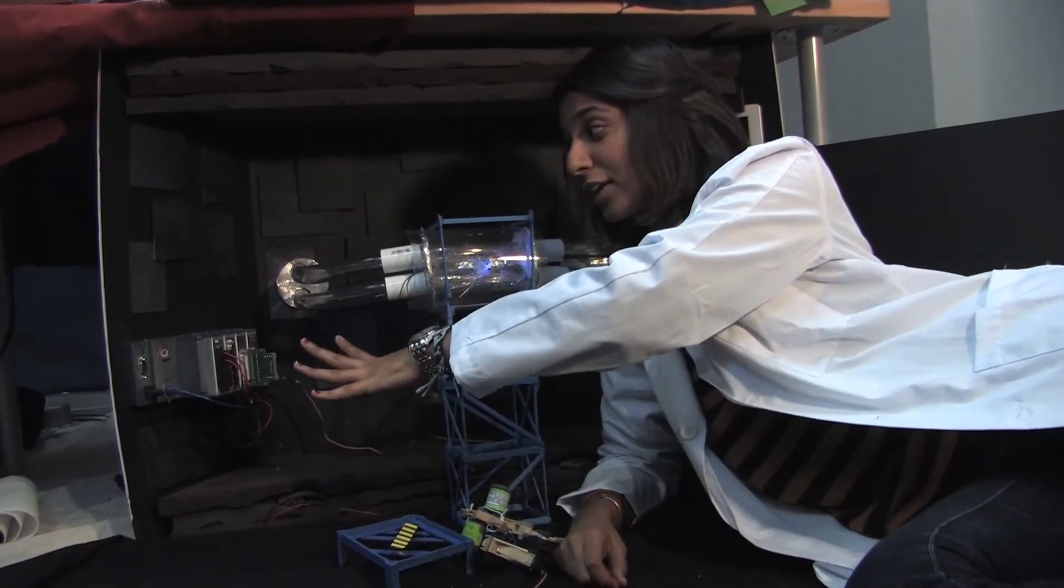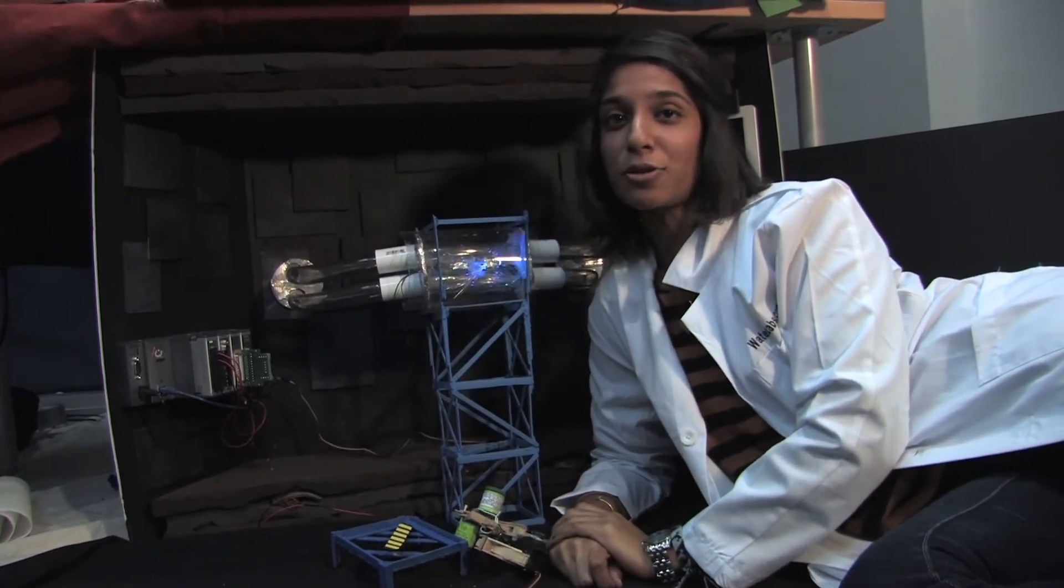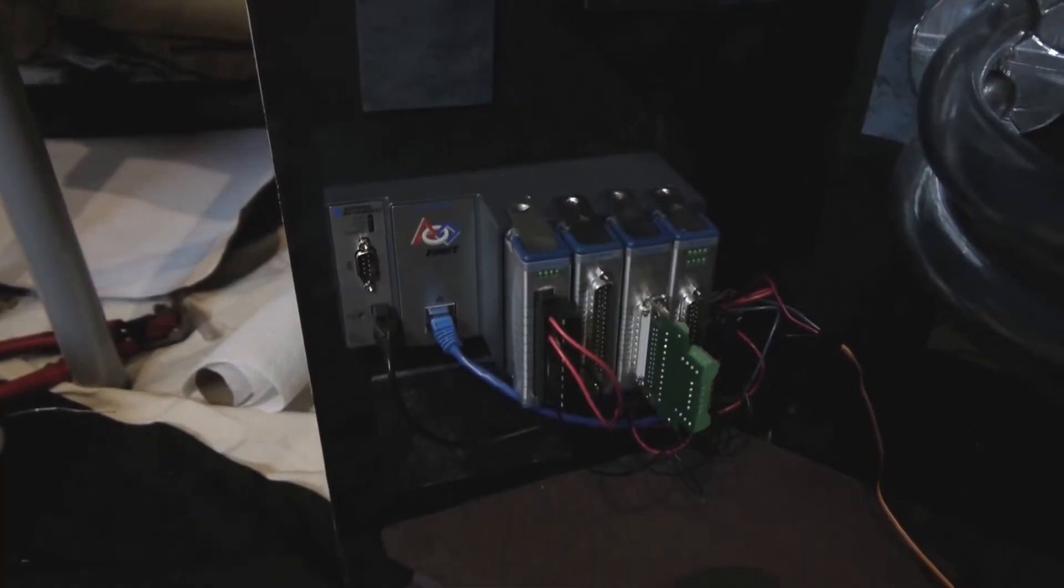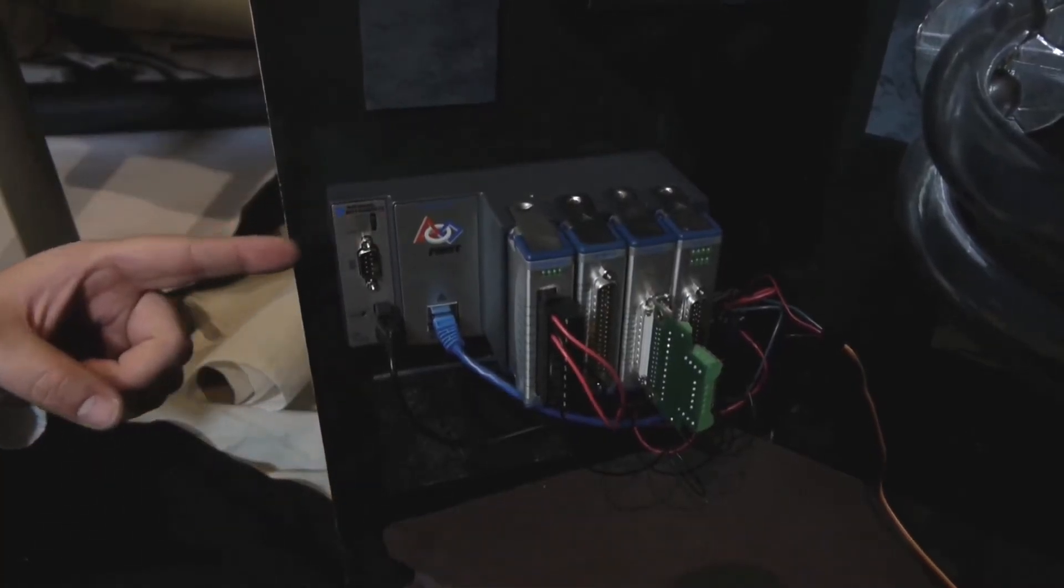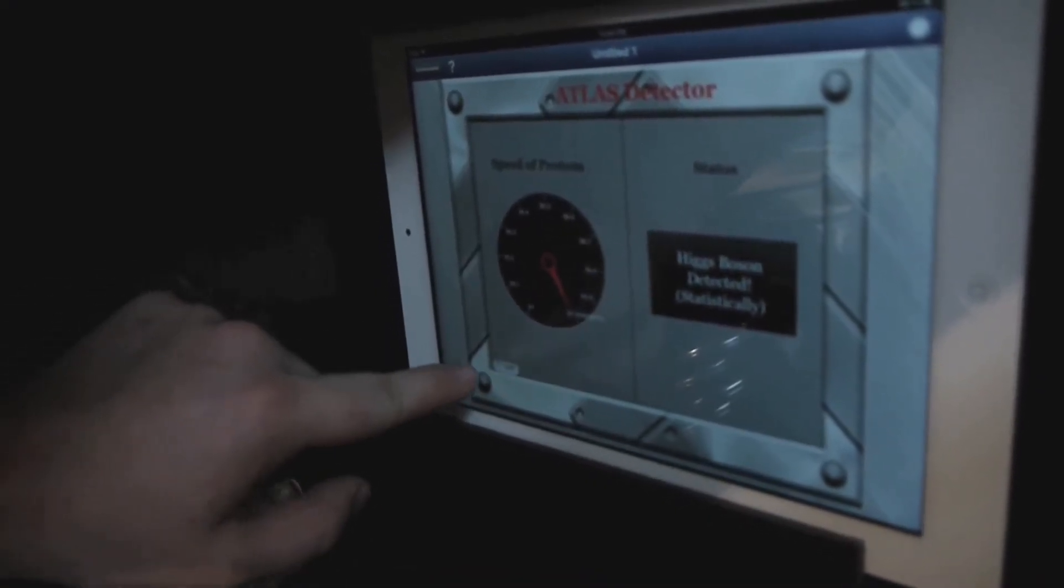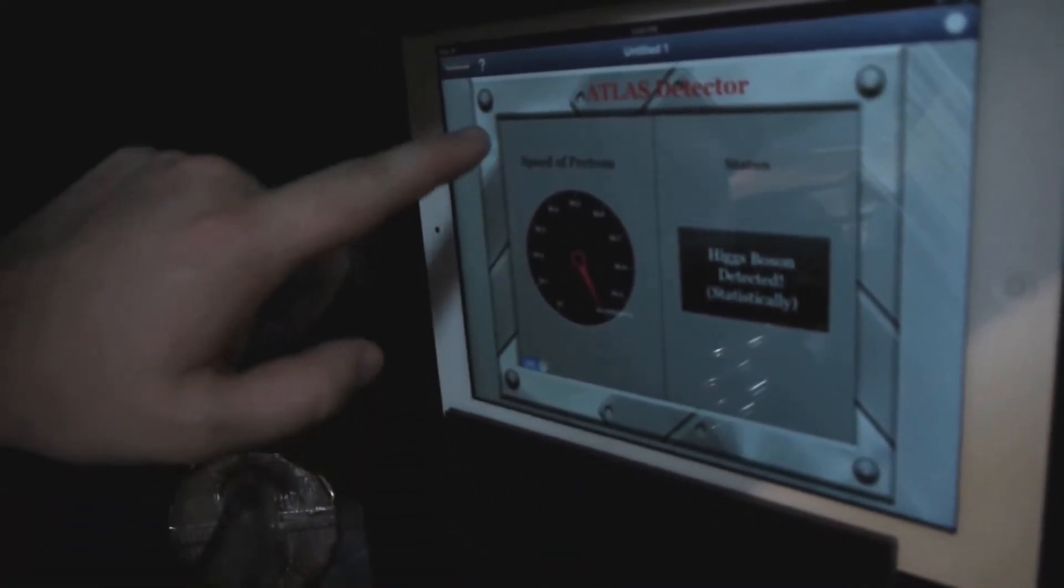This proton speed is programmatically controlled by this FIRST high school robotic competition Compact Rio, which is sending data to the iPad behind me. This iPad has displays for both the proton speed and the status of the program.